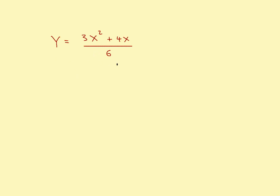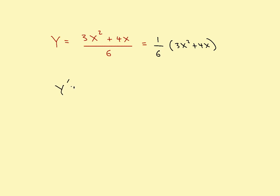Now, there are some cases where you don't have to use the quotient rule. A lot of students look at a fraction and think they have to use it, but actually you can get by without it in some cases. What you can do is change the expression into 1/6 times (3x squared plus 4x). If you do this, you don't have to use the quotient rule. The derivative would be the constant 1/6 times the derivative of the expression, which would be 6x plus 4, and you are done.